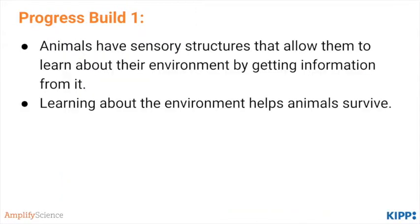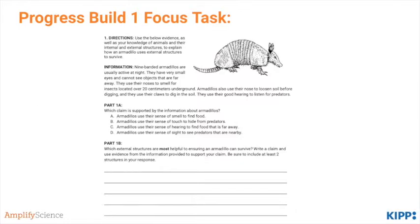All this leads up to students understanding Progress Build 1: animals have sensory structures that allow them to learn about their environment by getting information from it, and learning about the environment helps animals survive. Students demonstrate their understanding of this Progress Build on the first Focus Task. Go ahead and take a few minutes to complete the Focus Task, and then check back here for the answers.